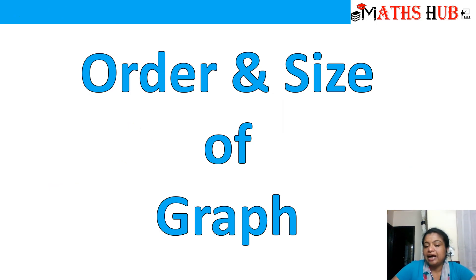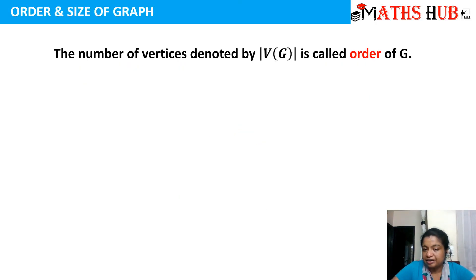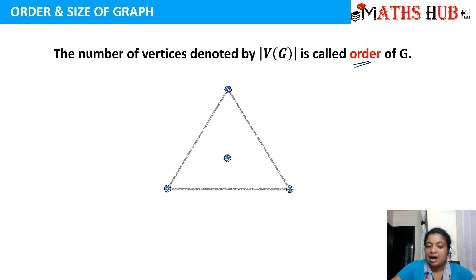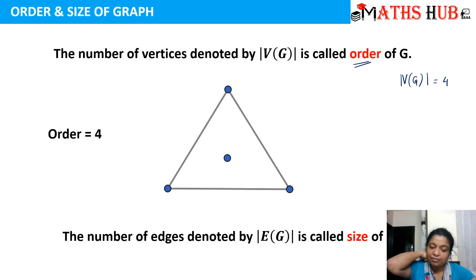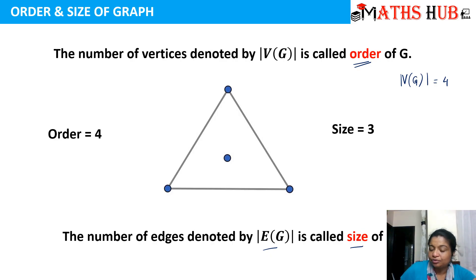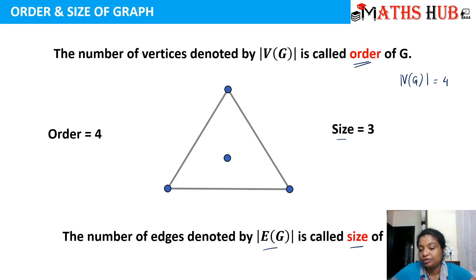Next, let's talk about the order and size of a graph. The number of vertices, denoted by the cardinality of the vertex set V(G), is called the order of the graph. For example, if I count the vertex set here it is 1, 2, 3, and 4, so the cardinality of V(G) is 4 — the order is 4. The size is the number of edges, denoted by the cardinality of E(G). In this case there are three edges, so the size of the graph is 3. Order means the count of the number of vertices and size means the count of the number of edges.